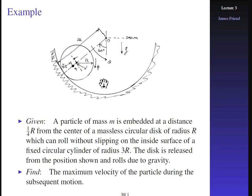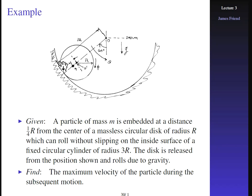Now let's look at an example. Say we have a particle of mass M embedded at a distance one-quarter R from the center of a massless circular disk of radius R. This disk rolls without slipping on the inside surface of a fixed circular cylinder of radius 3R. The disk is massless — only this single particle counts. We're looking for the maximum velocity of the particle during the subsequent motion.